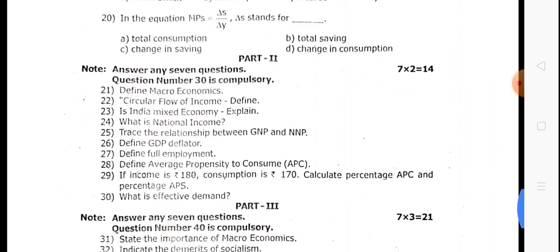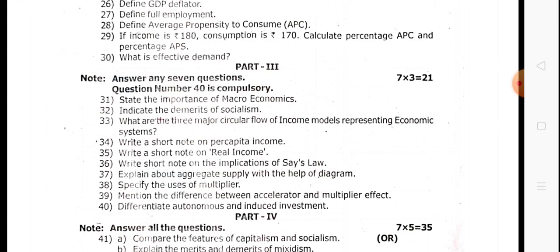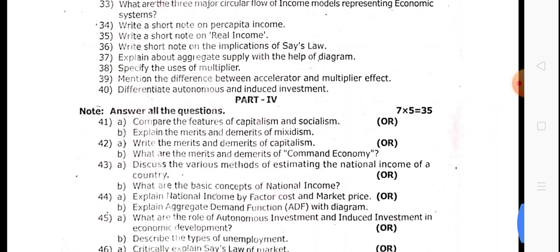Two marks — question 30. Next, three marks — question 40, which is a book pack question. Question 30 is also a book pack question. Five marks — question 41 AB.